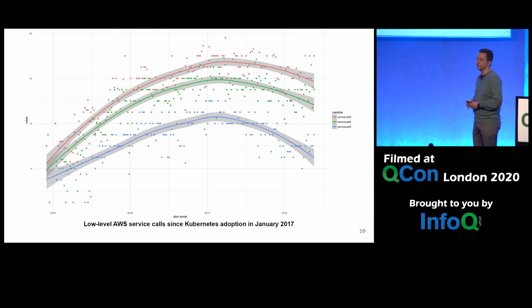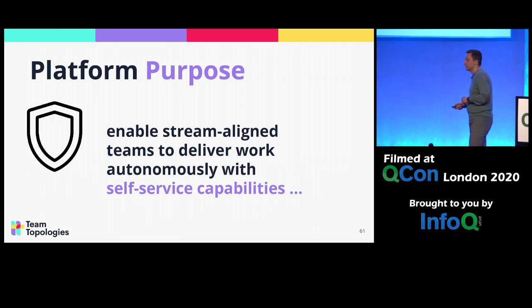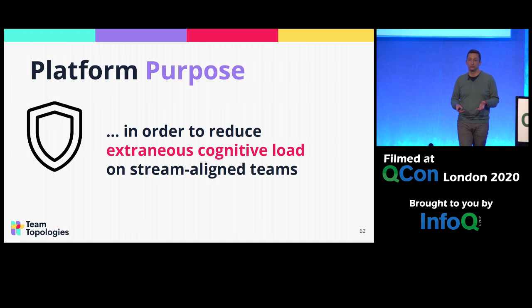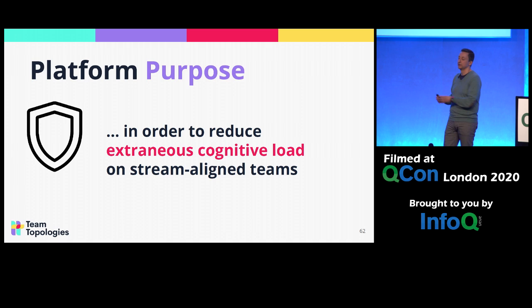Once they introduced the platform, they started to see a decrease in traffic directly through AWS. I find this interesting because it's kind of a proxy for the cognitive load on the application teams. The platform team's purpose is always to enable the stream-aligned teams to work more autonomously with self-service capabilities and reduce the extraneous cognitive load. This is a very different starting point from just saying 'we're going to put all shared services in a platform' — and it can drive very different types of decisions.